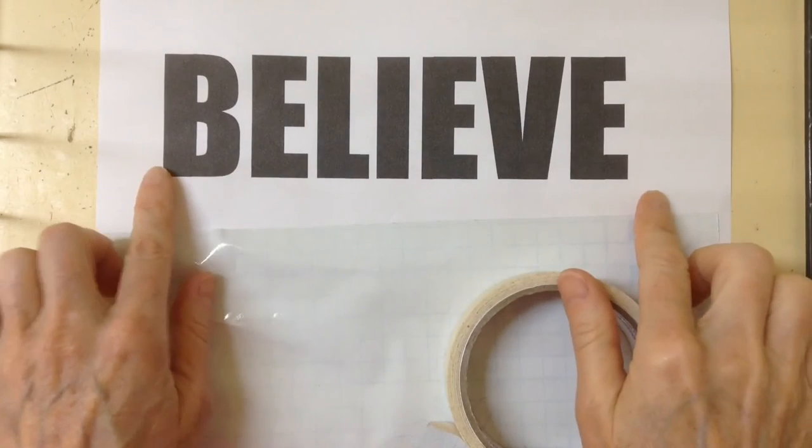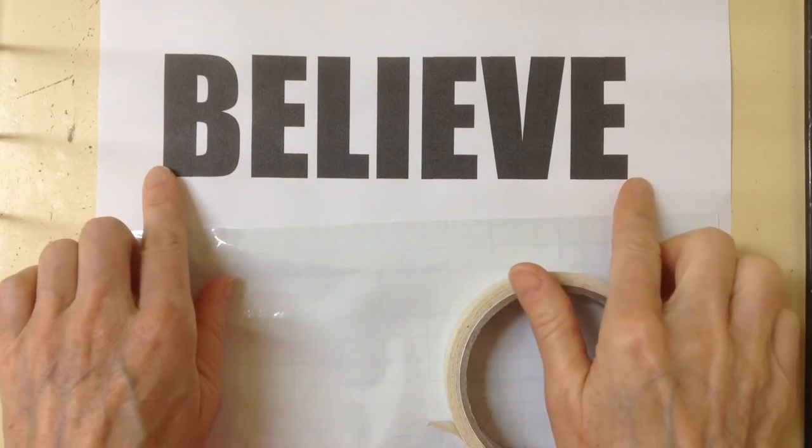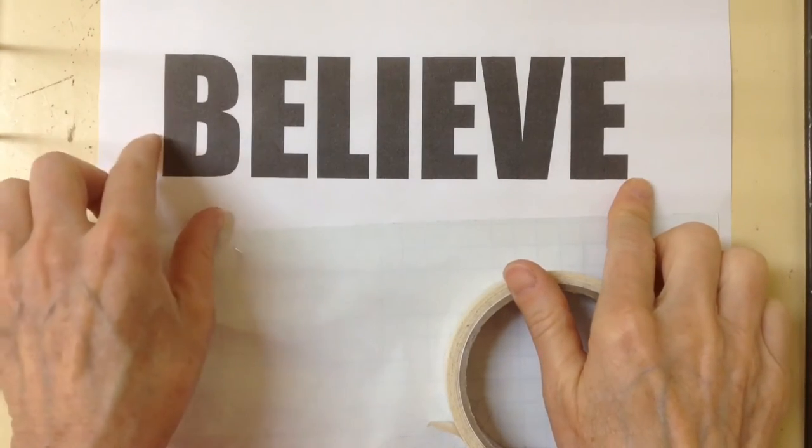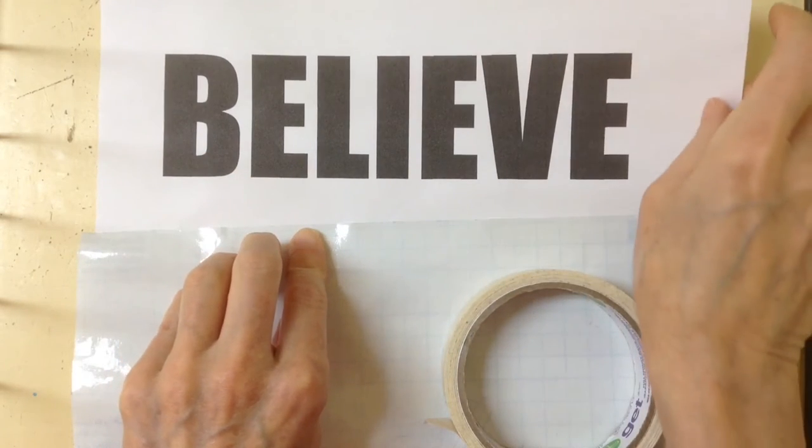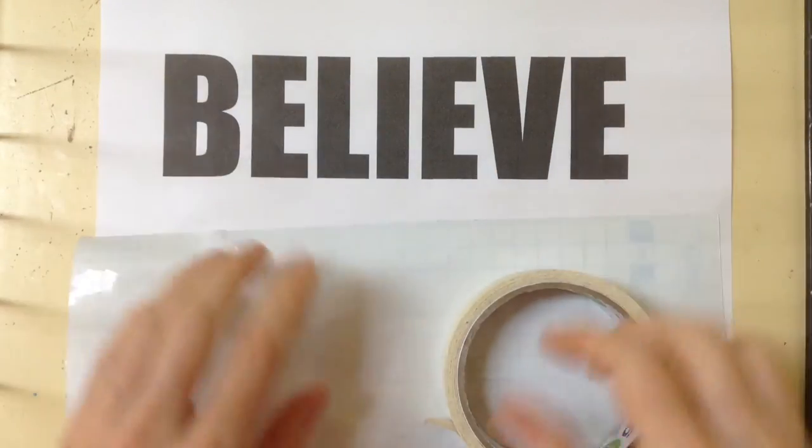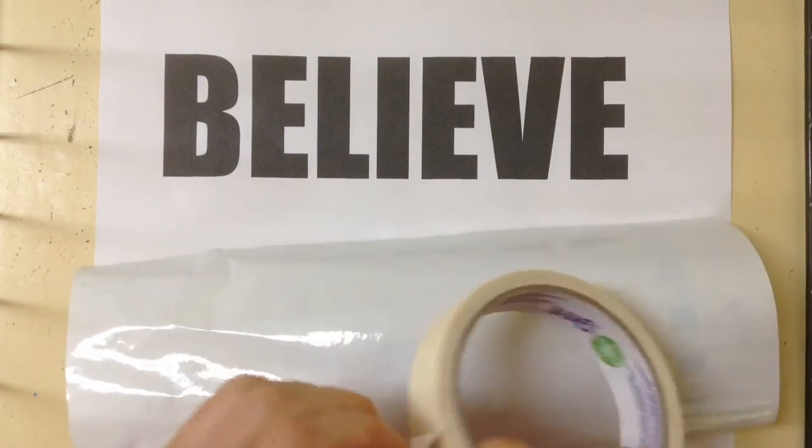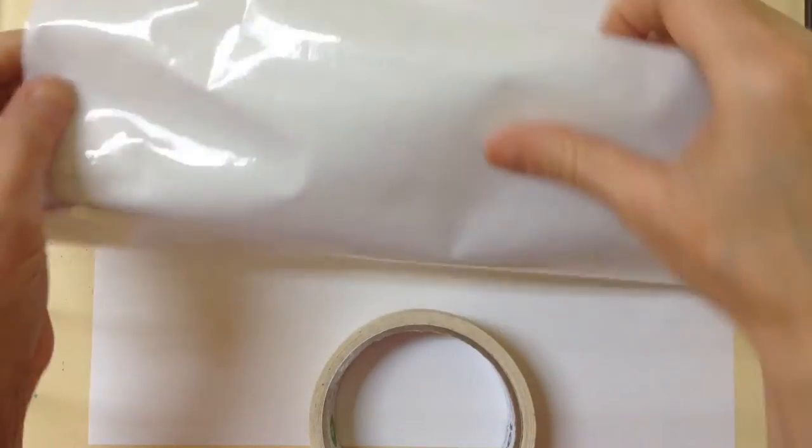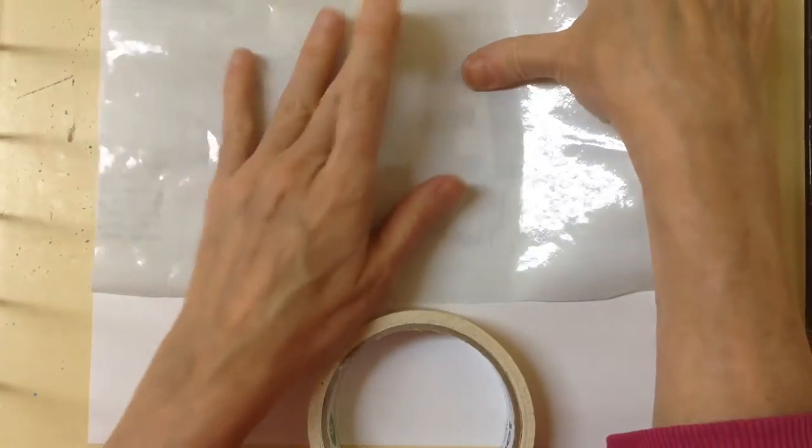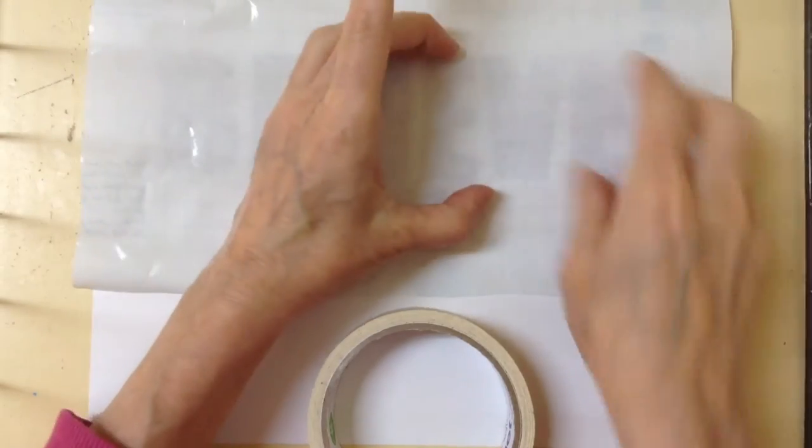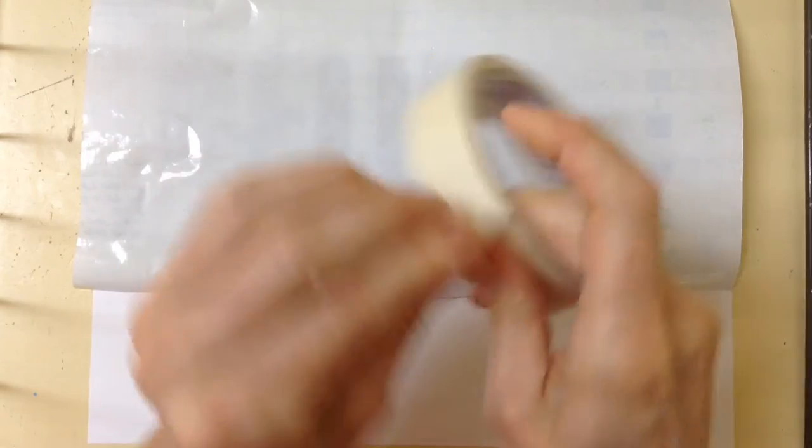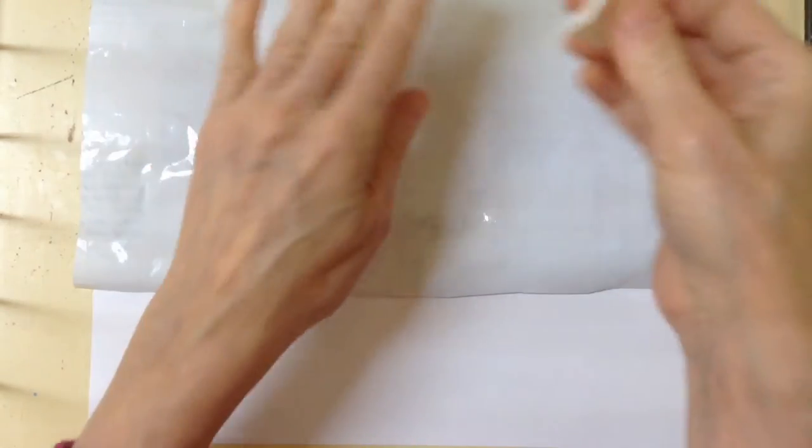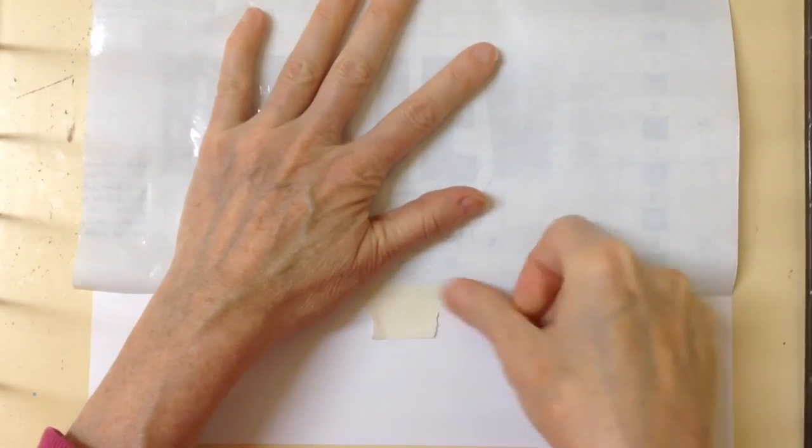So I printed out the word believe and I ended up using the font Impact in the 200 size and I printed it in landscape in Word. And what I want to do now is just tape some MacTac on top. So MacTac is clear, sticky on one side. Sometimes people use it for shelf paper, sometimes people use it to cover books with. You can get it probably in most craft stores, maybe hardware stores as well.